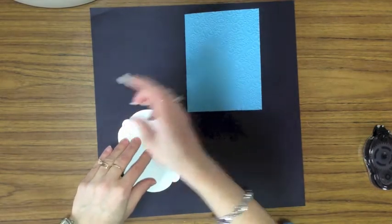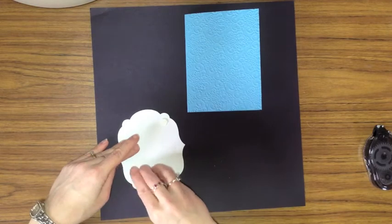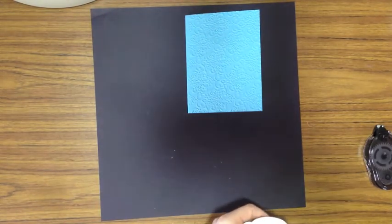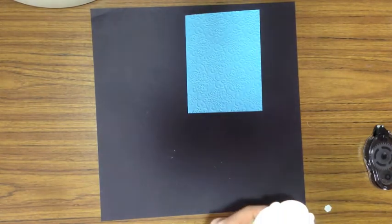I like to use the dimensionals when I'm attaching something where there's a lot of texture, when I've used an embossing folder like I did in this case. When there's this texture, which is wonderful to look at, sometimes it makes it so that the Snail doesn't adhere very well.